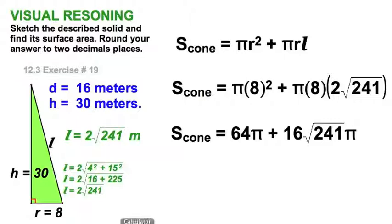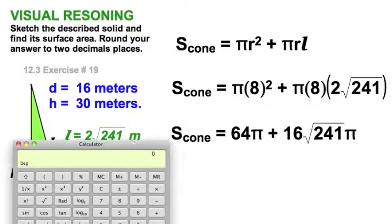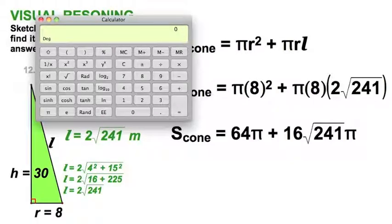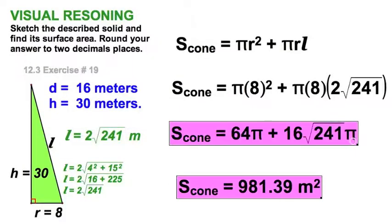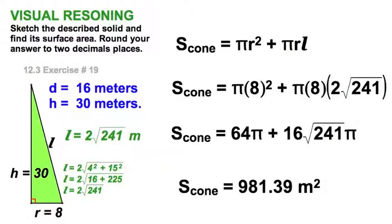Let's break out the calculator for an answer to the nearest hundredths place. I start with 64π — that's 64 times pi, about 200, which makes sense. I put that in memory, then evaluate the second term: radical 241 times 16 times pi, which is about 780. Adding that to the stored value, I get 981 and 39 hundredths. The unit is square meters.